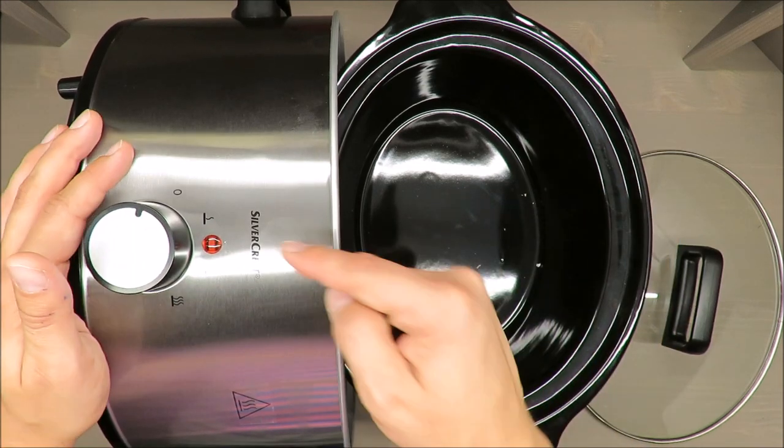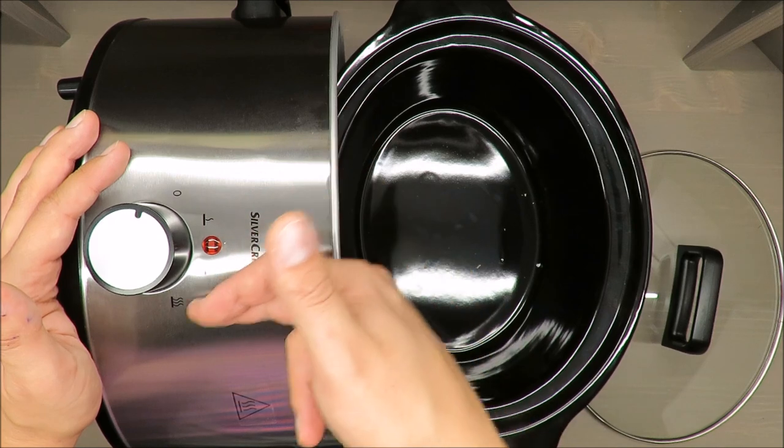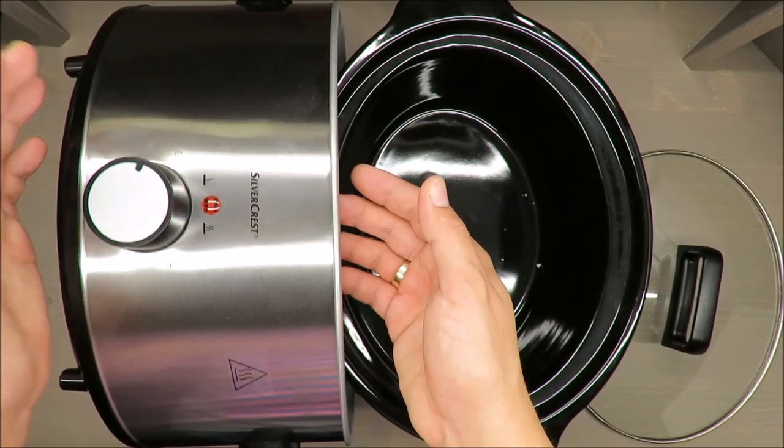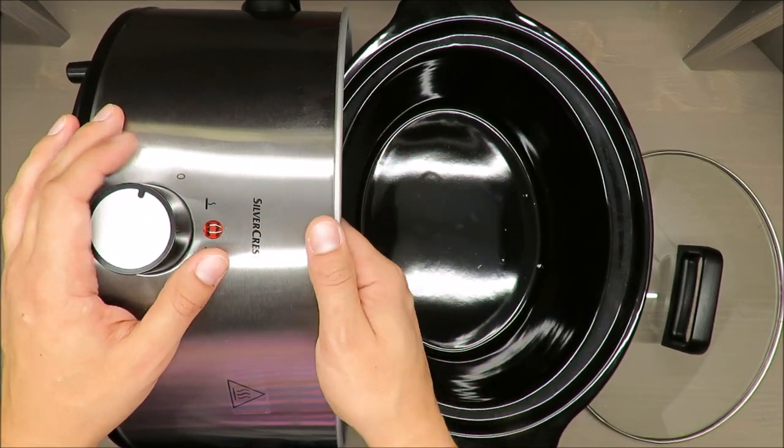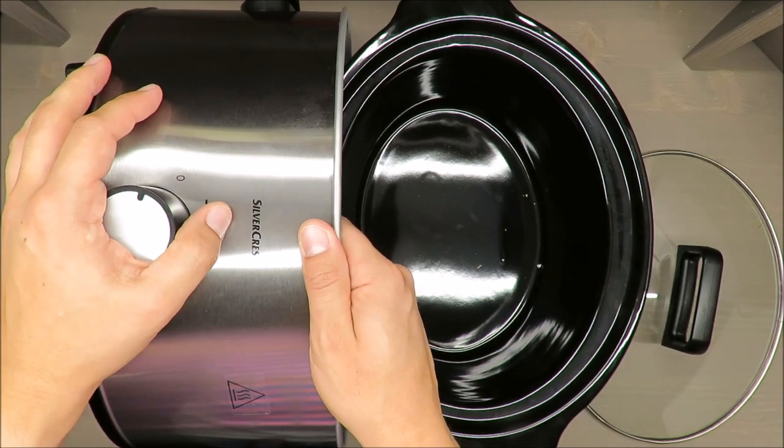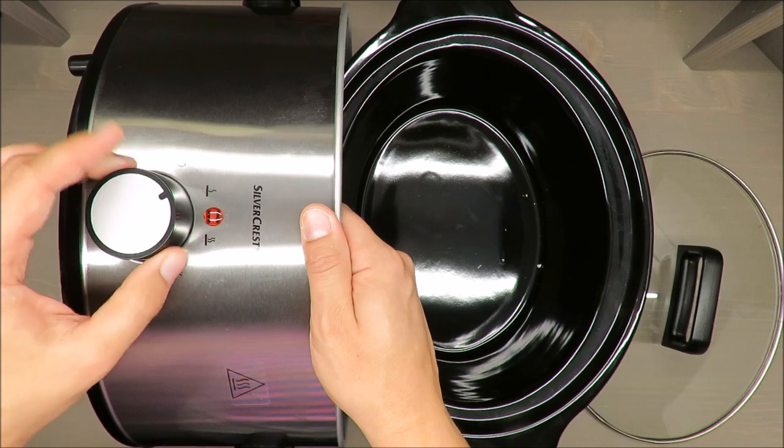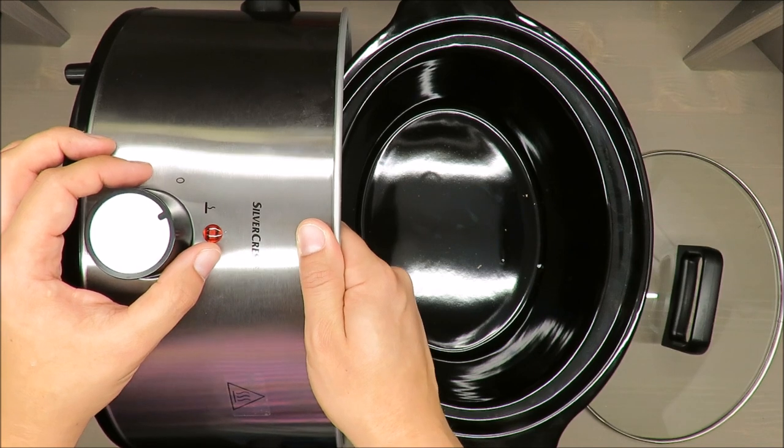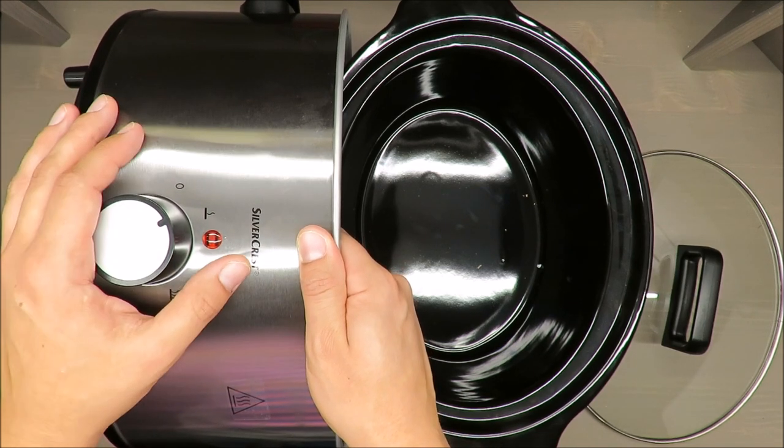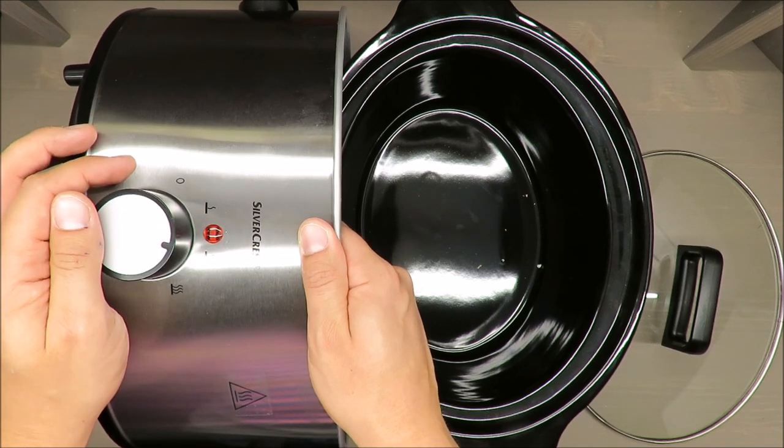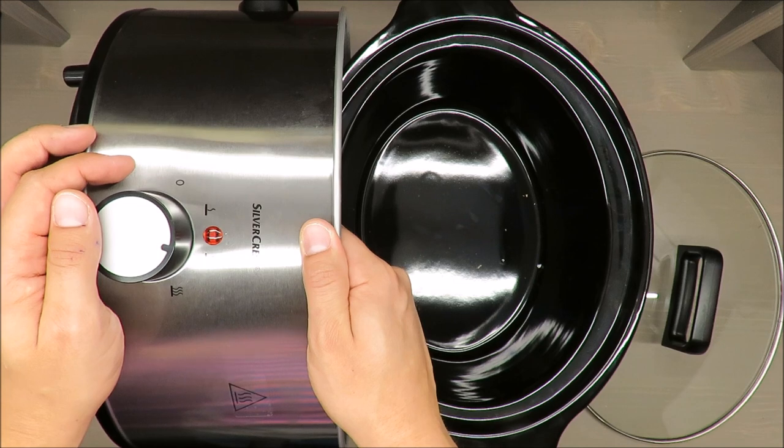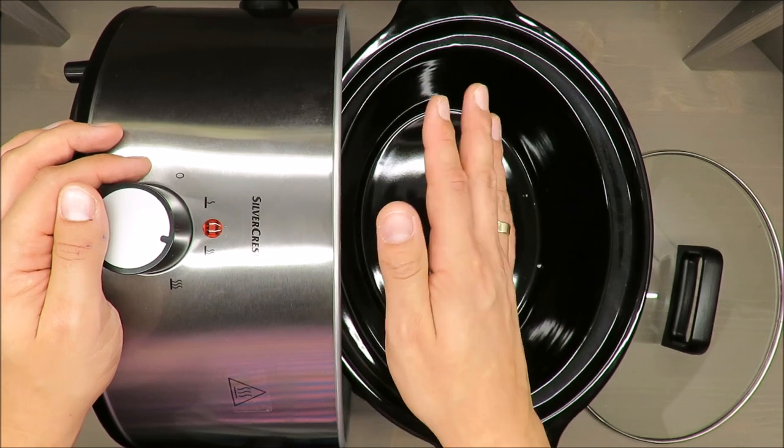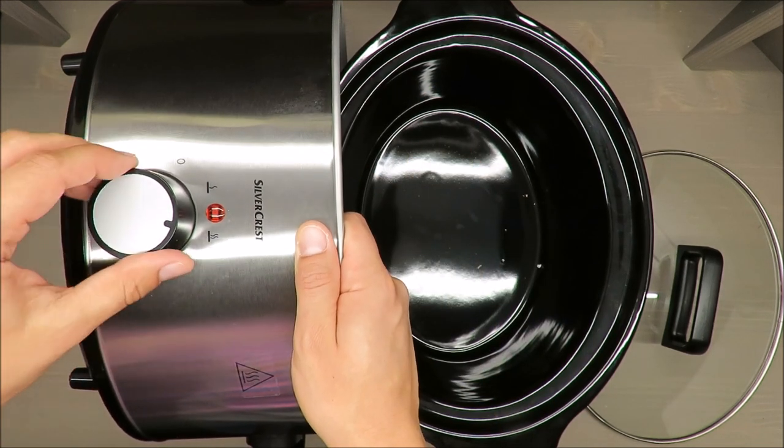It has three, actually four, types of working parameters. First is off. Second is keeping temperature at 50-70 degrees Celsius. Third is low or slow power heating, which can reach up to 95-98 degrees Celsius.